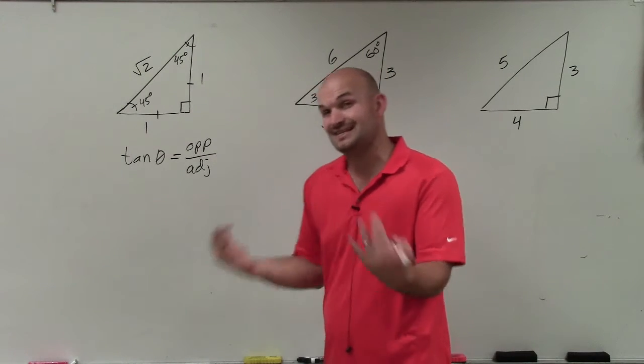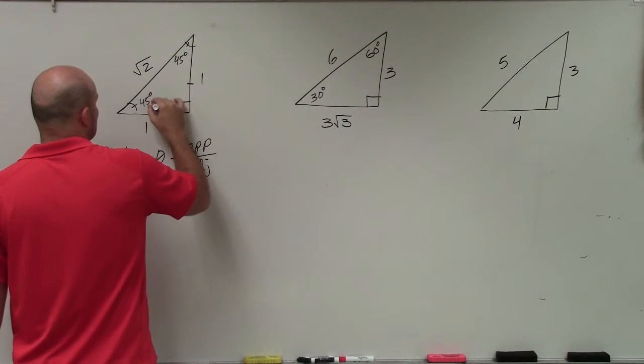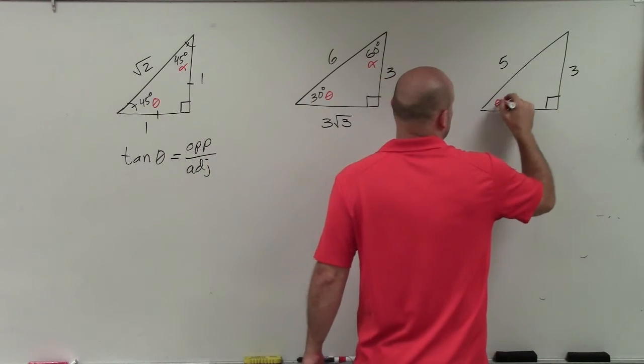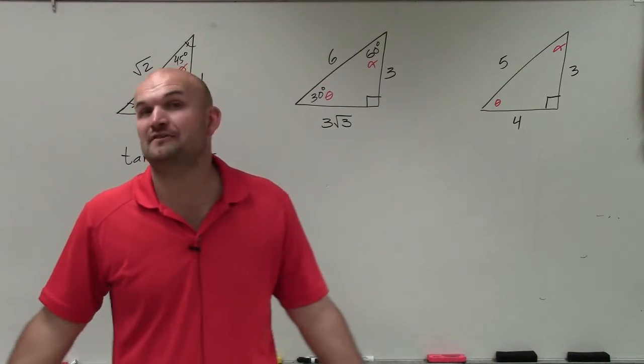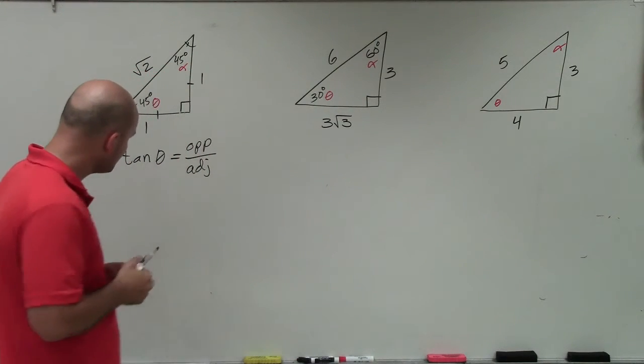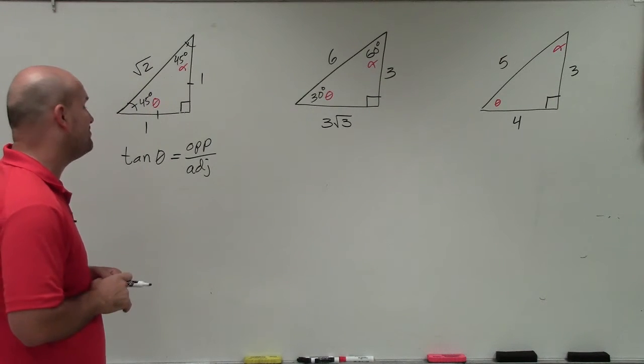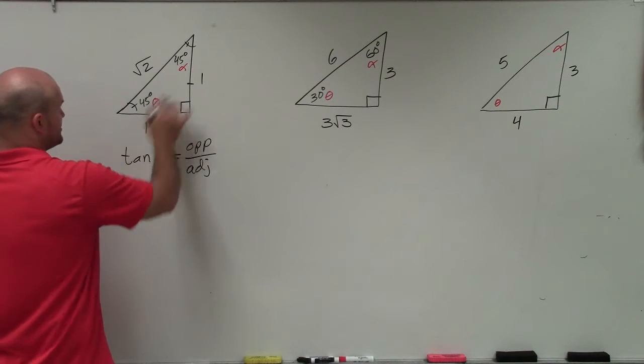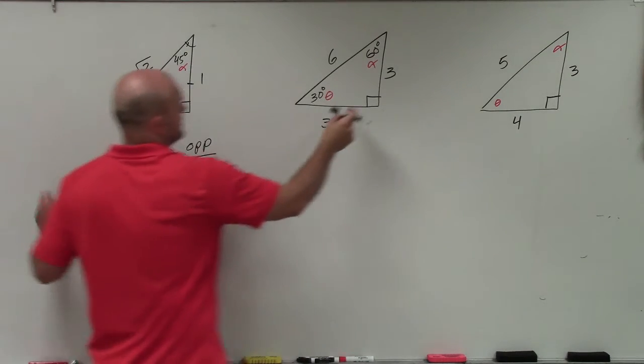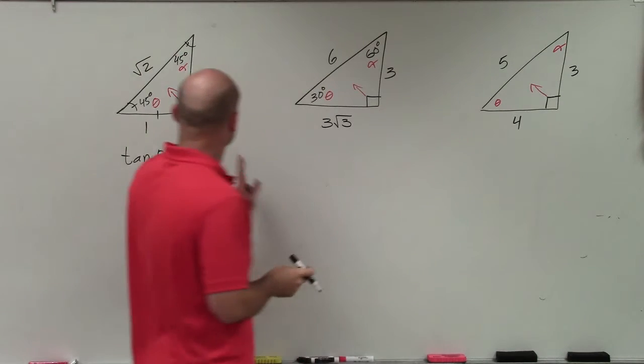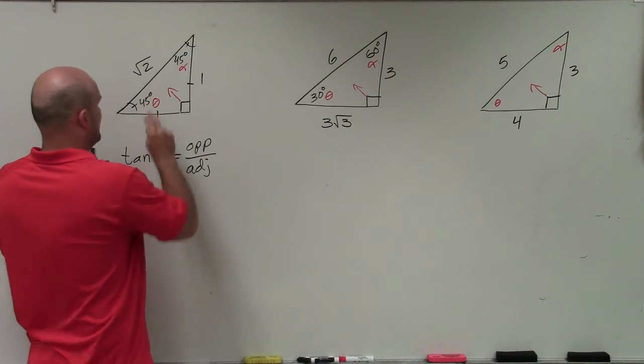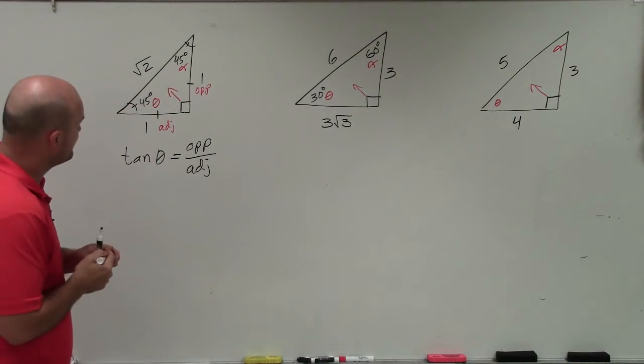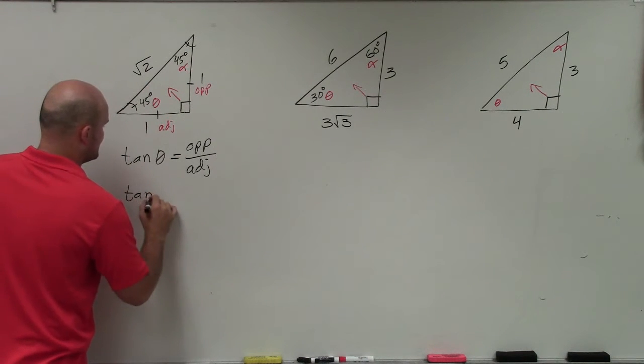The purpose of this video is not to talk about special right triangles. So if you're kind of a little bit lost, you can maybe just take it from me. In reality, it doesn't matter. I could just give you the problem with these lengths, and that would be perfectly OK for this video. The tangent of an angle theta is equal to the opposite over the adjacent. The tangent function is comparing the length of the opposite side over the length of the adjacent side.